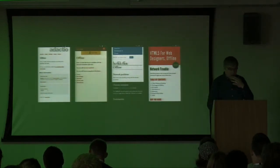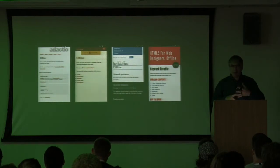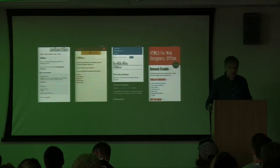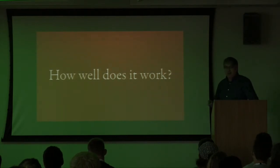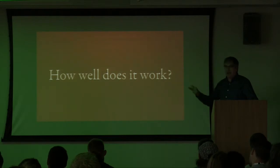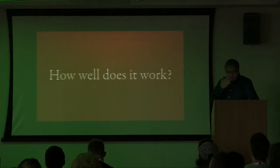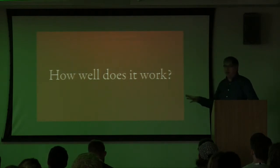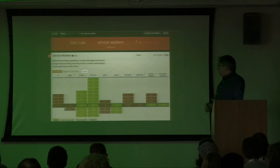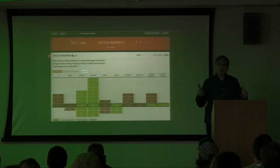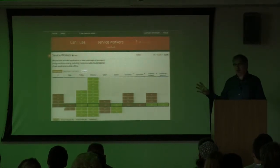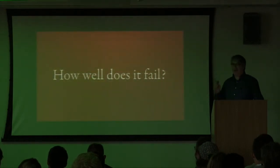How well does it work? It works pretty well — you have to understand promises, the Cache API, the Fetch API, there's some stuff to get your head around. There's no magic behavior; you have to tell it exactly what to do. We look at Can I Use and see some green but also a lot of red. You might think: not enough support. But as we saw with CSS shapes, this doesn't tell the whole picture — it doesn't answer: how well does it fail? So how well do service workers fail? They fail really well.